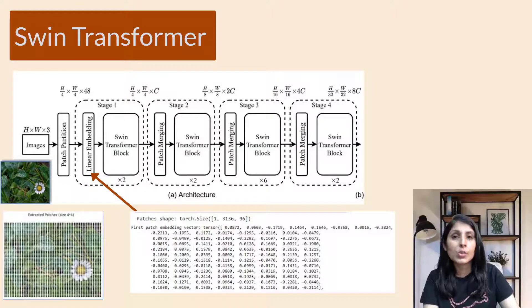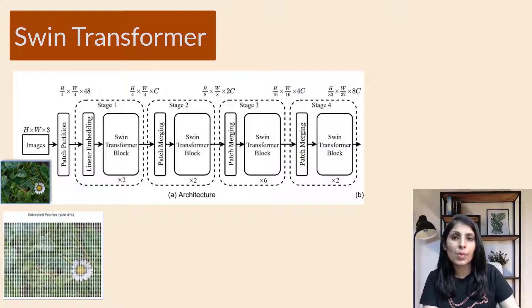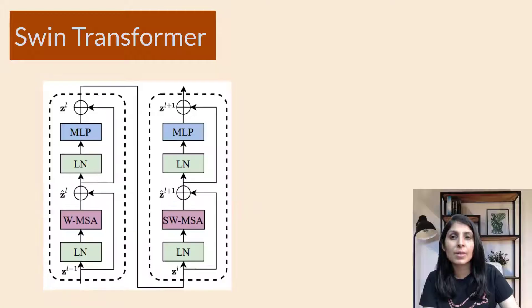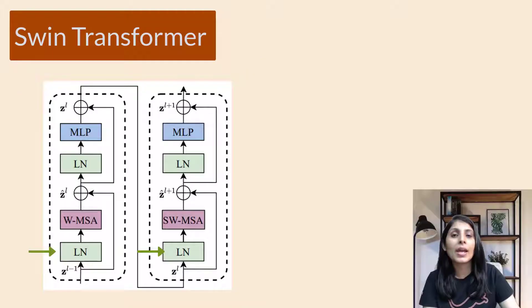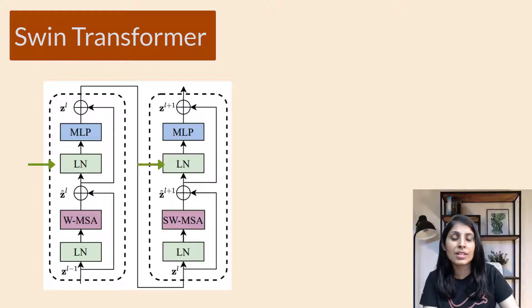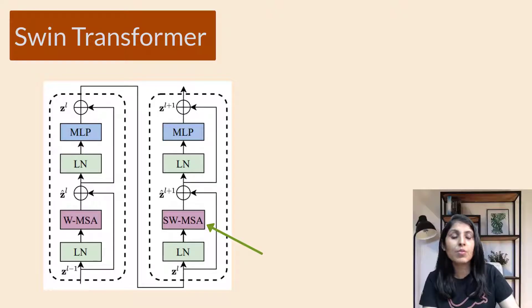Once the image is converted into a sequence of vectors using linear embedding, it can be processed by the attention layers of the Swin Transformer blocks. The Swin Transformer block consists of two subunits. Each subunit has a normalization layer followed by an attention module, then another normalization layer, and then a multi-layer perceptron layer. The first subunit uses a Window Multi-Head Self-Attention layer, while the second subunit uses a Shifted Window Multi-Head Attention layer.